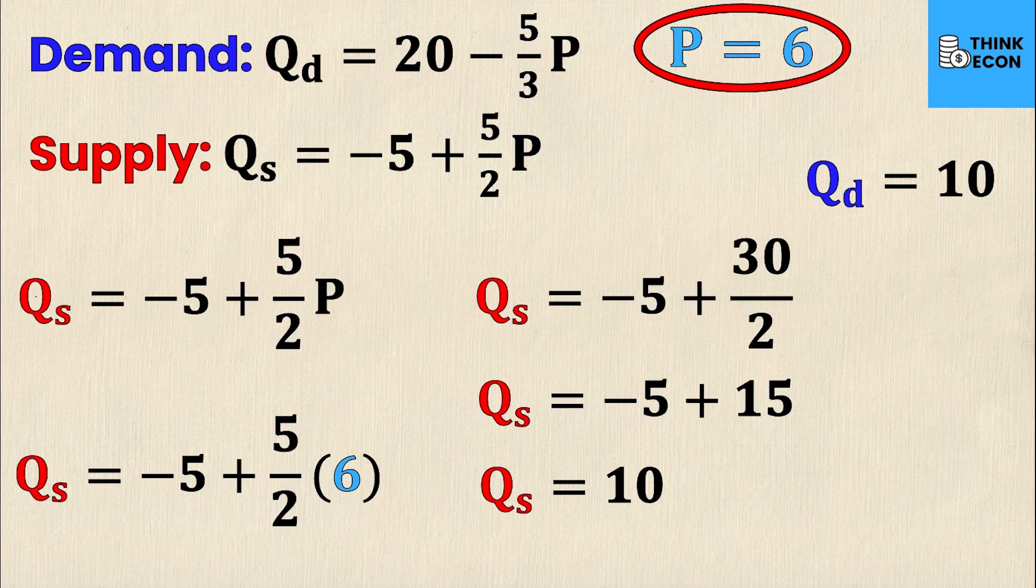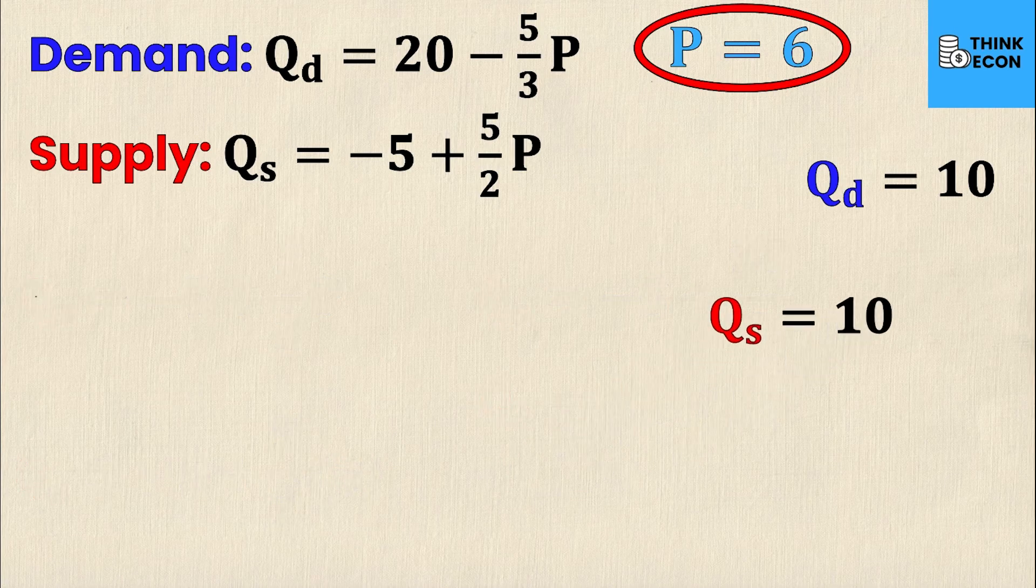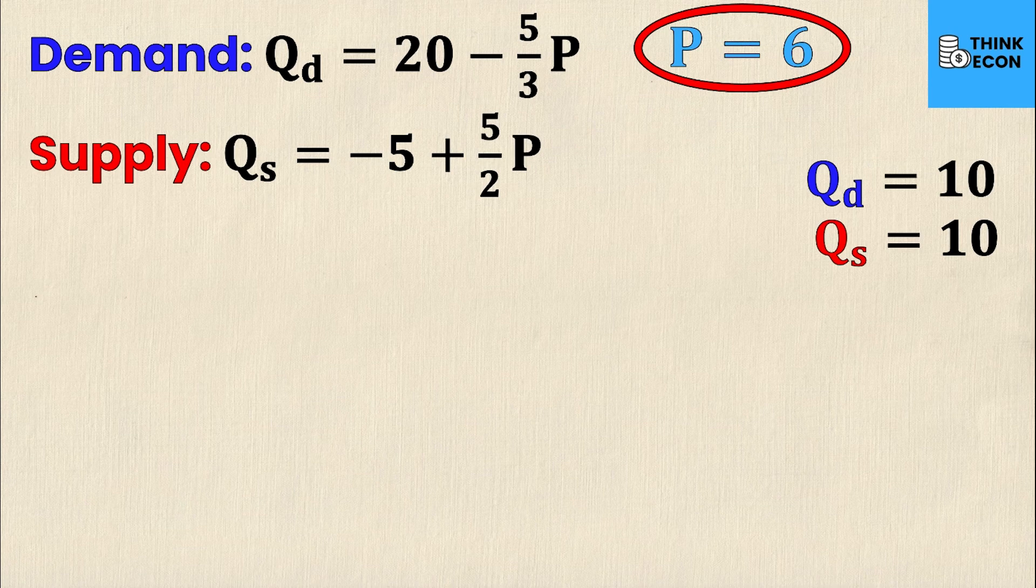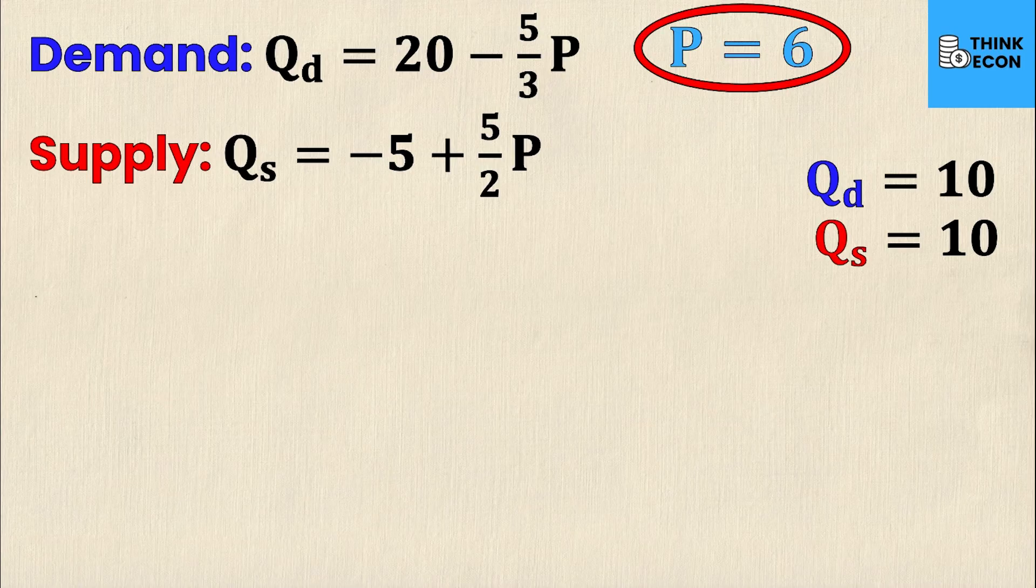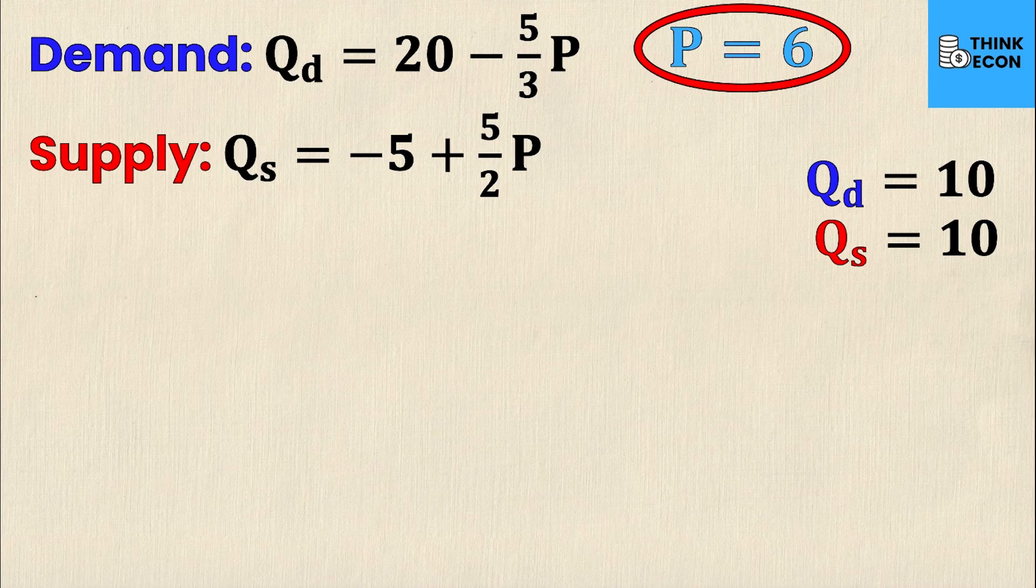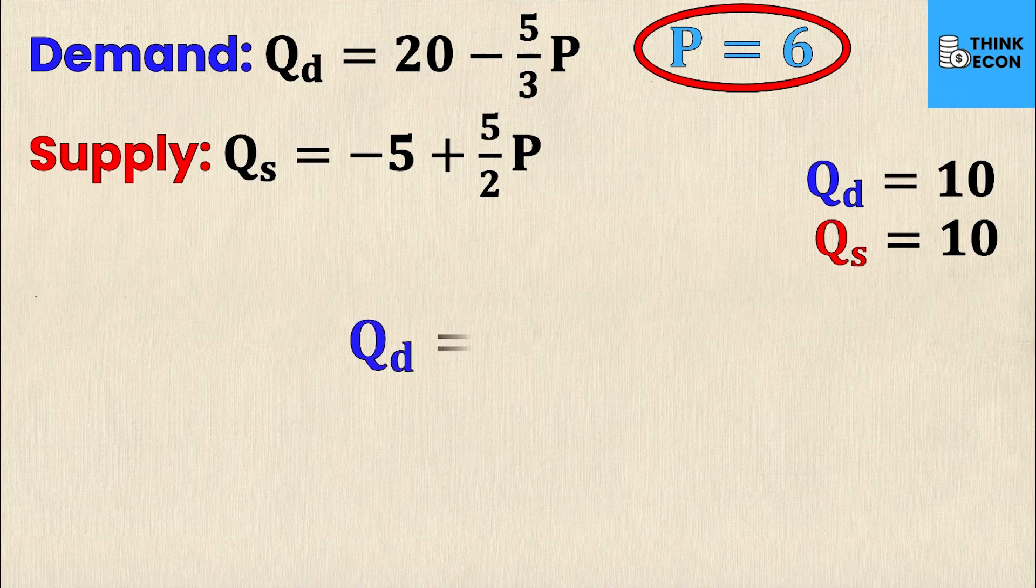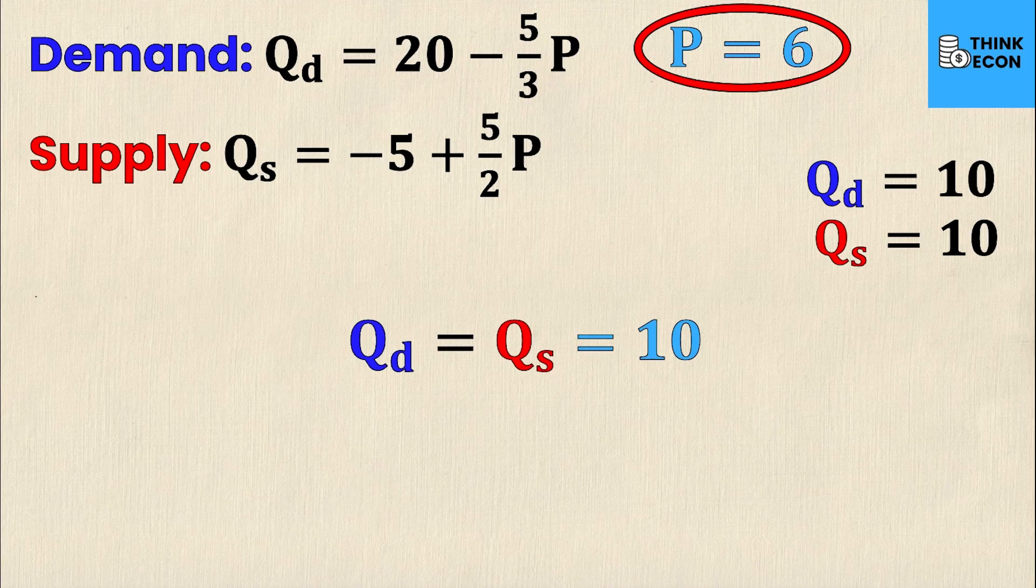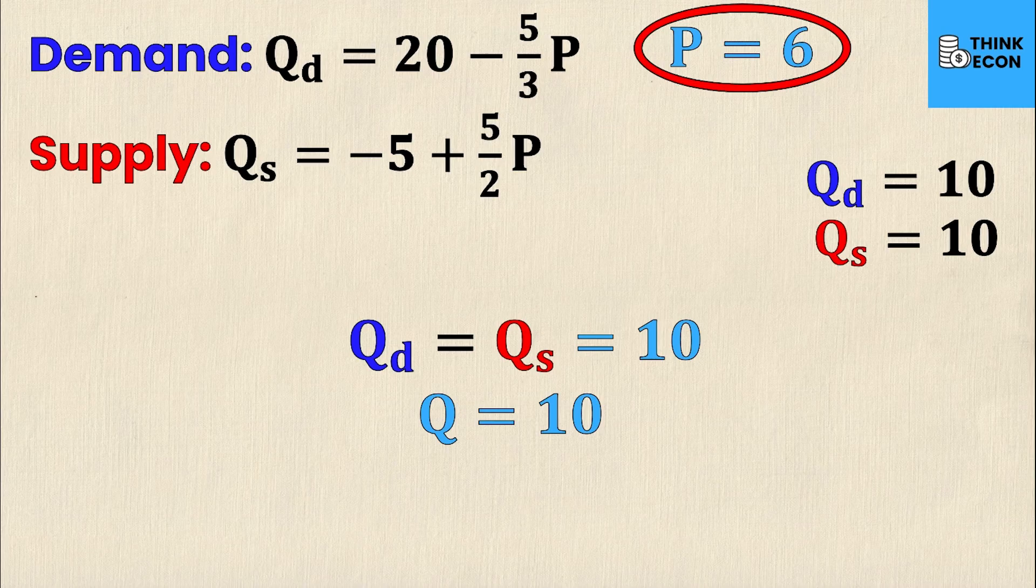And what do you know, the QS and QD values are the exact same. This has to happen, and it will only happen at one point, and that is equilibrium. If I subbed in a P value for anything except 6, my quantity demanded and quantity supplied would not be the same. This is because these are both linear equations and they only have one point of intersection. So now I can denote that QD equals QS, which equals 10. This means that my quantity at equilibrium equals 10.